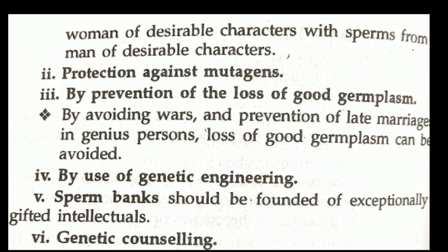By avoiding wars and prevention of late marriage in genius persons, loss of good germplasm can be avoided. Germplasm refers to the total gene and allele frequency in a population. Avoiding germplasm loss is essential, and positive eugenics plays a significant role in this.